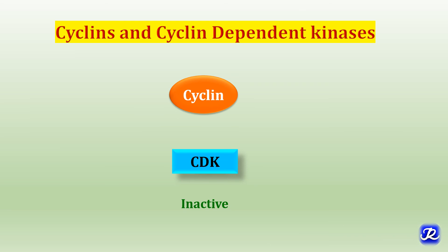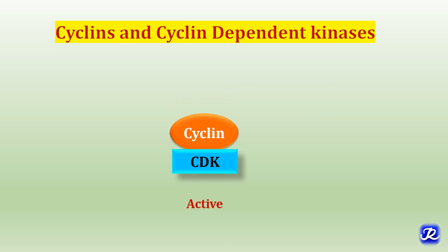Cell cycle is regulated by complexes of proteins called cyclins and cyclin-dependent kinases, or CDKs. At least 10 different cyclins and 8 different CDKs are known, acting in various combinations at specific points in the cell cycle. Cyclin is the regulatory unit and CDK is the catalytic unit of these complexes. They act as protein kinases which phosphorylate serine, threonine, or tyrosine residues of many proteins involved in the cell cycle. Without the binding of cyclin, CDKs are inactive; when cyclin binds to CDK, it becomes active.